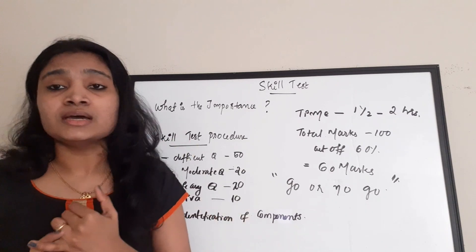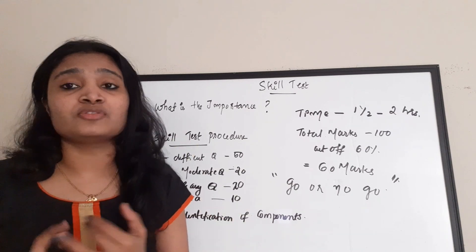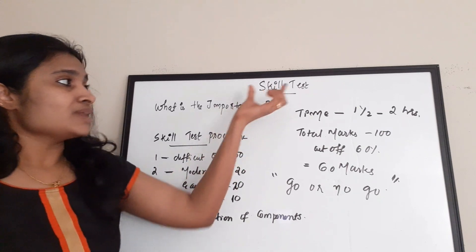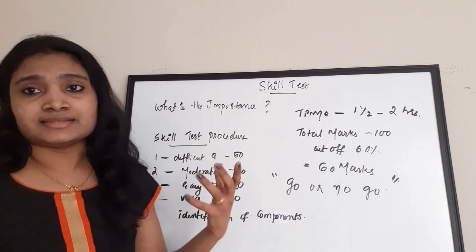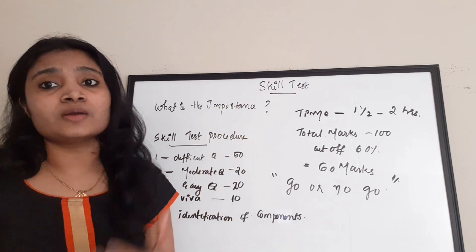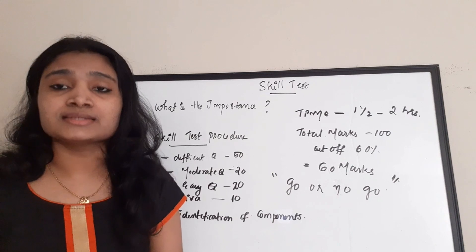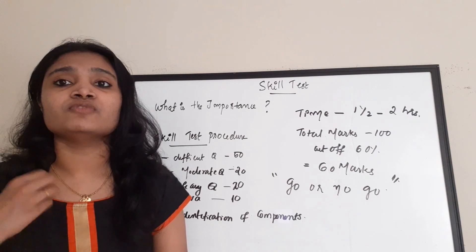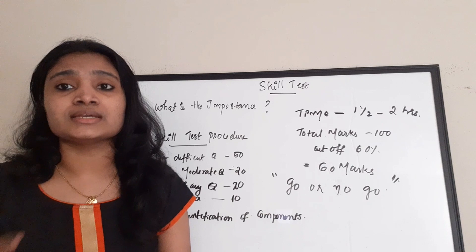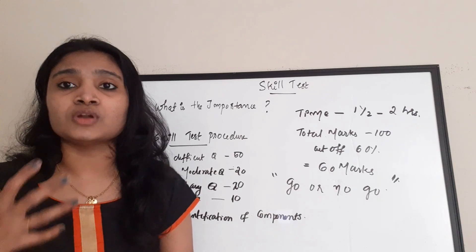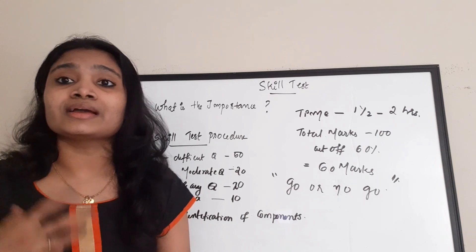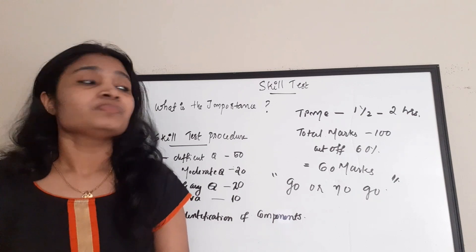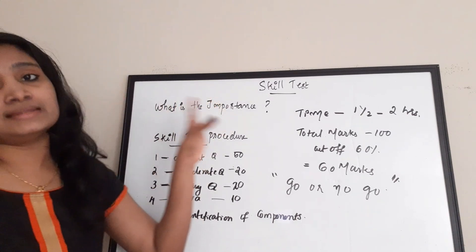The selection procedure of Technical Assistant consists of Stage 1, which is the written test, and after the written test there is a skill test. Skill test means practical knowledge test — you have to do some experiments and give a viva on laboratory knowledge, components, or basic theories.